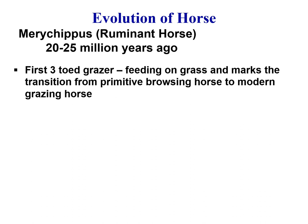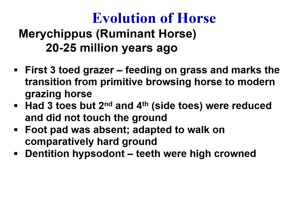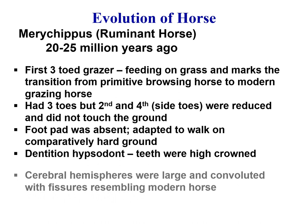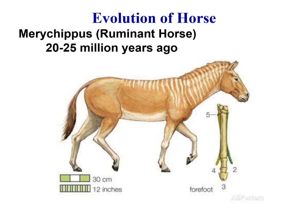Then comes Merychippus, a ruminant horse from 20 to 25 million years ago. It was the first three-toed grazer feeding on grass — the transition from primitive browsing horse to modern grazing horse. It had three toes, but the second and fourth side toes were reduced and did not touch the ground. The foot pad was absent, and the animal was adapted to walk on comparatively hard ground due to a change in climatic conditions. Dentition also changed — it became hypsodont, with teeth of high crown. Cerebral hemispheres were large and convoluted, resembling the modern horse.